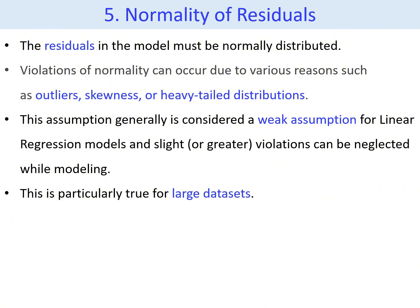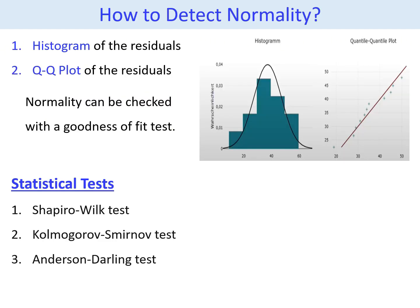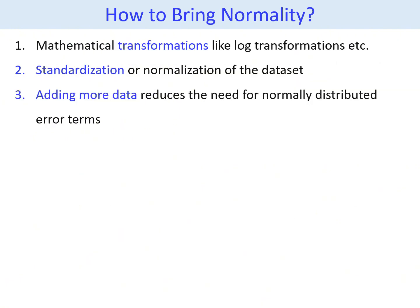This is particularly true for large datasets. To detect normality, we can observe the histogram of the residuals and the QQ plot of the residuals. These visual methods help determine if there are any deviations from normality. For a more formal check, statistical tests like the Shapiro-Wilk test, Kolmogorov-Smirnov test, and Anderson-Darling test can be used to determine whether the data follows a normal distribution. If the data is not normal, some methods to normalize it include mathematical transformations such as log transformation, standardizing or normalizing the dataset, or adding more data to reduce the impact of non-normality.